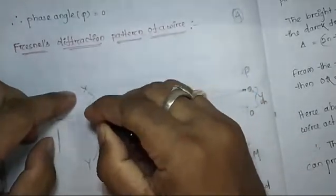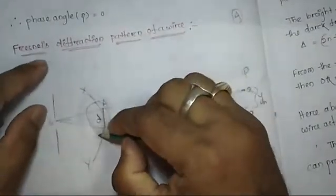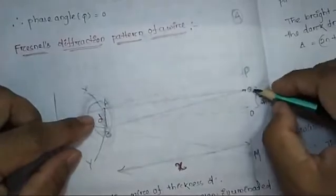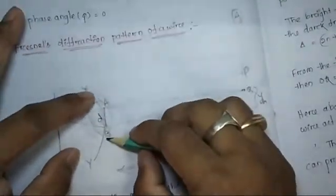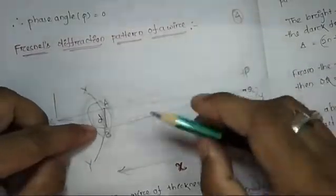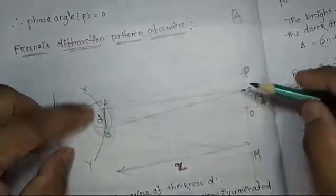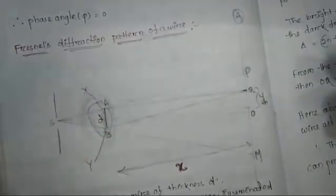At point Q, we consider one wavefront and another wavefront with multiple half period zones. We cannot say whether the larger half period zone above A or below A is going to be blocked. The number of half period zones on the upper side and lower side that are blocked for point Q will be different. Therefore, the intensity at point Q depends on the path difference, which is BQ minus AQ.